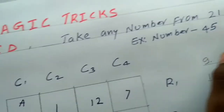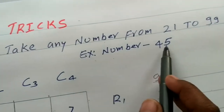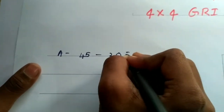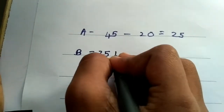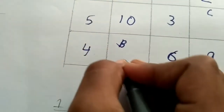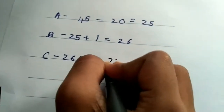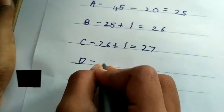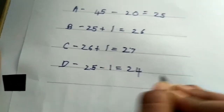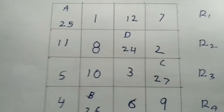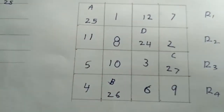Now define variables a, b, c, and d. Take the example number 45. a is equal to 45 minus 20, which equals 25 — write 25 in box a. b is equal to 25 plus 1, which equals 26 — write 26 in box b. c is equal to 26 plus 1, which equals 27 — write 27 in box c. d is equal to 25 minus 1, which equals 24 — write 24 in box d. Now all 16 boxes are filled with numbers.